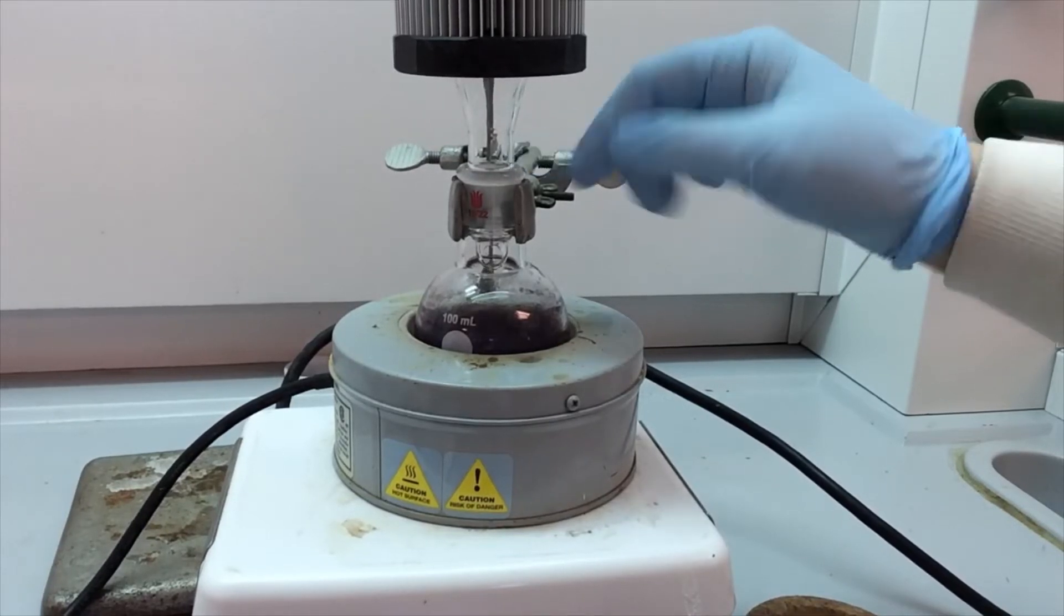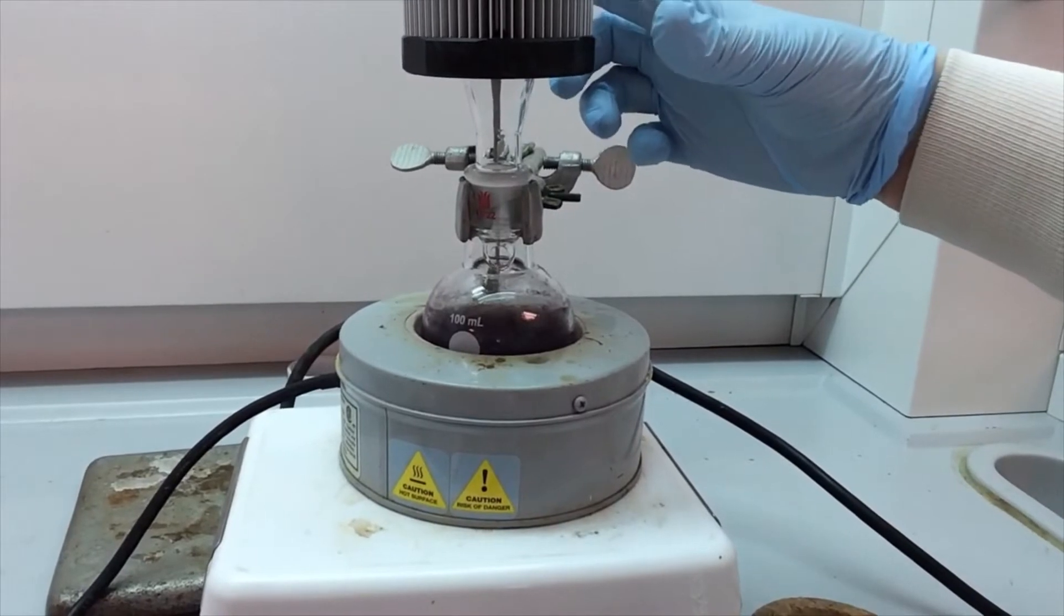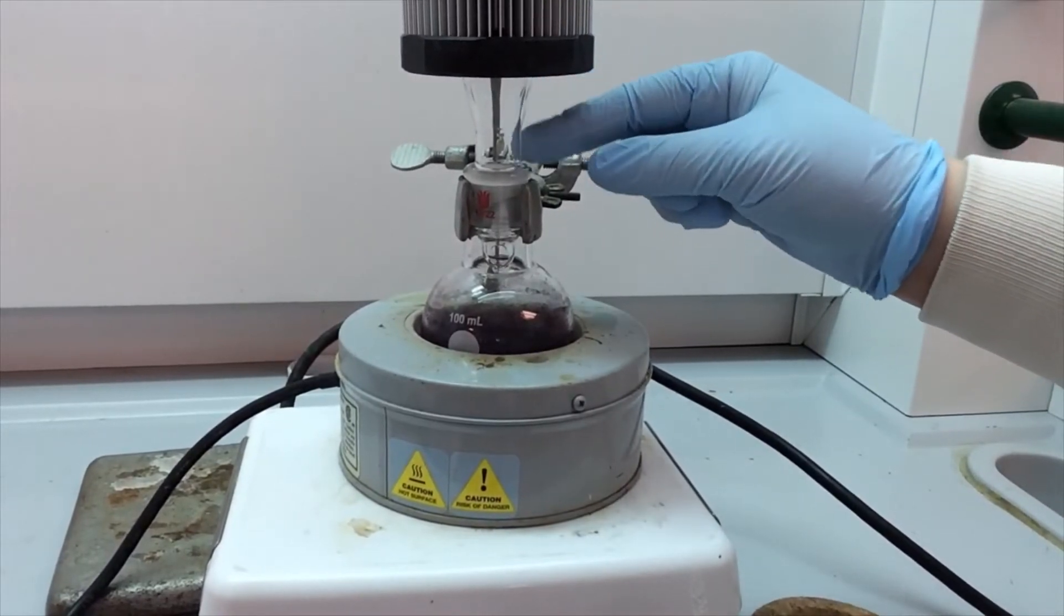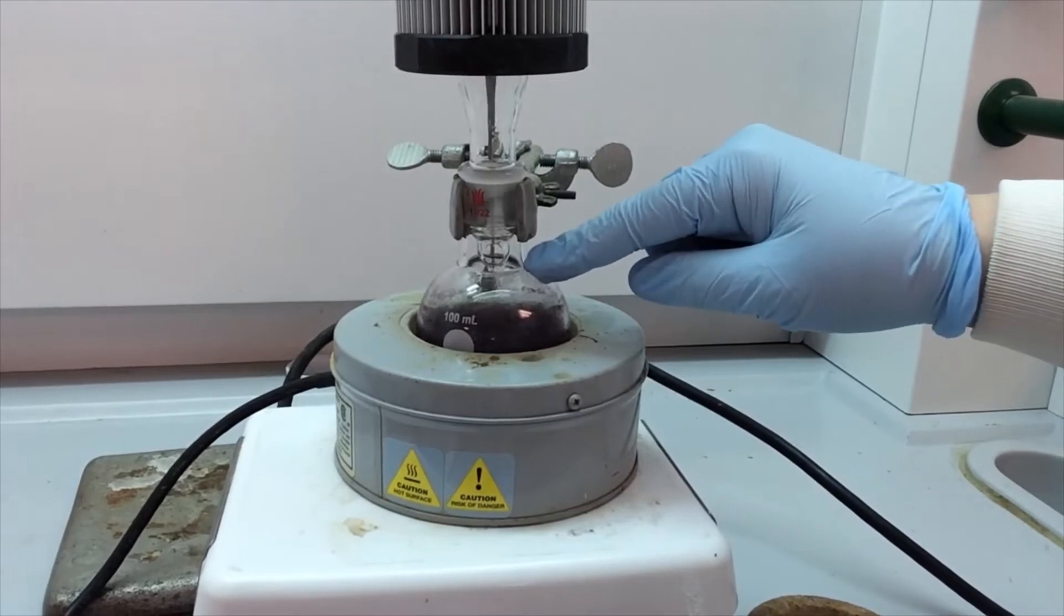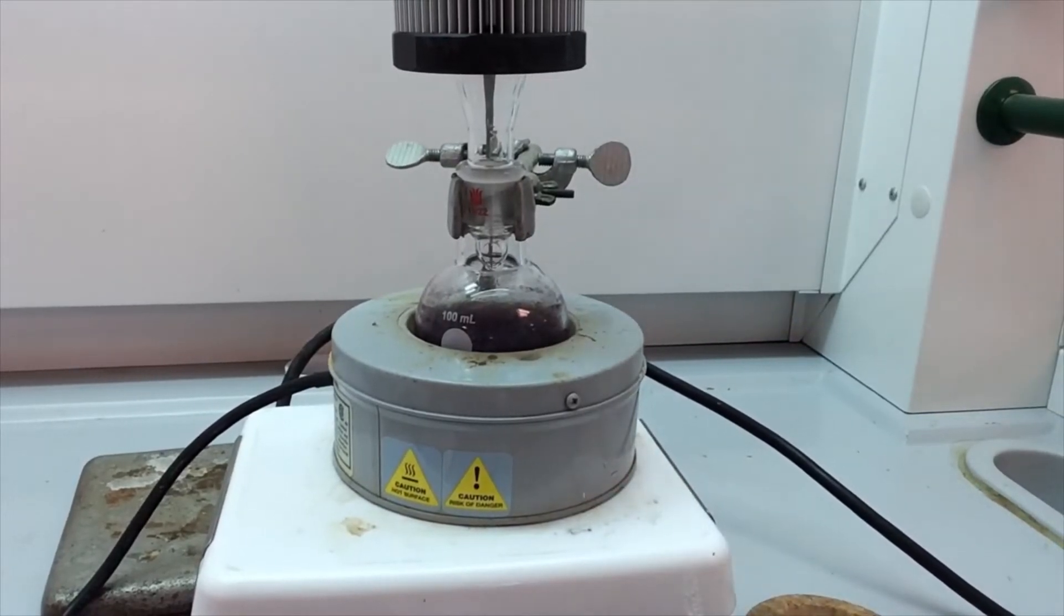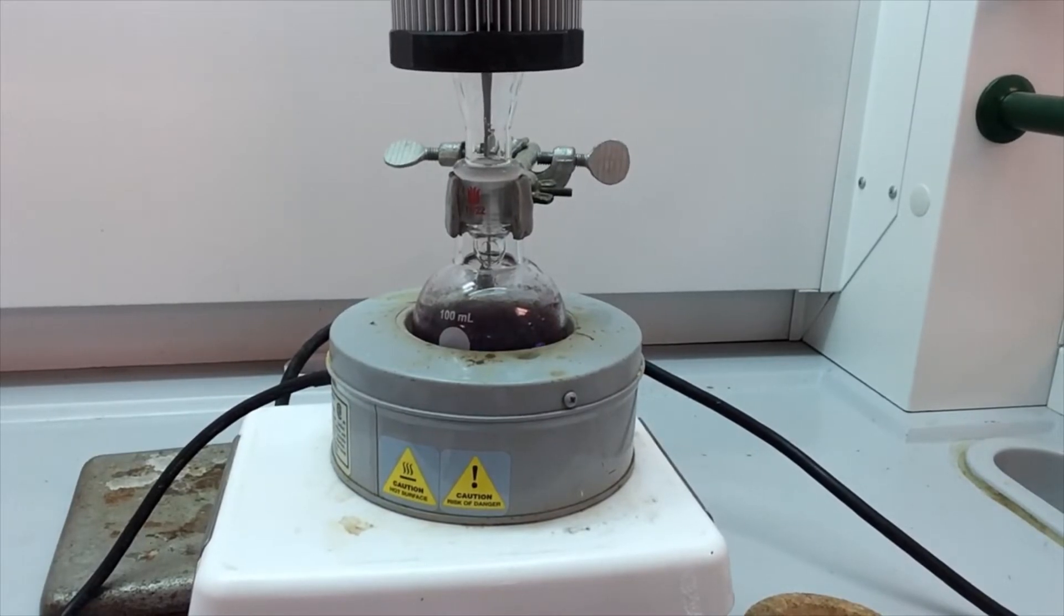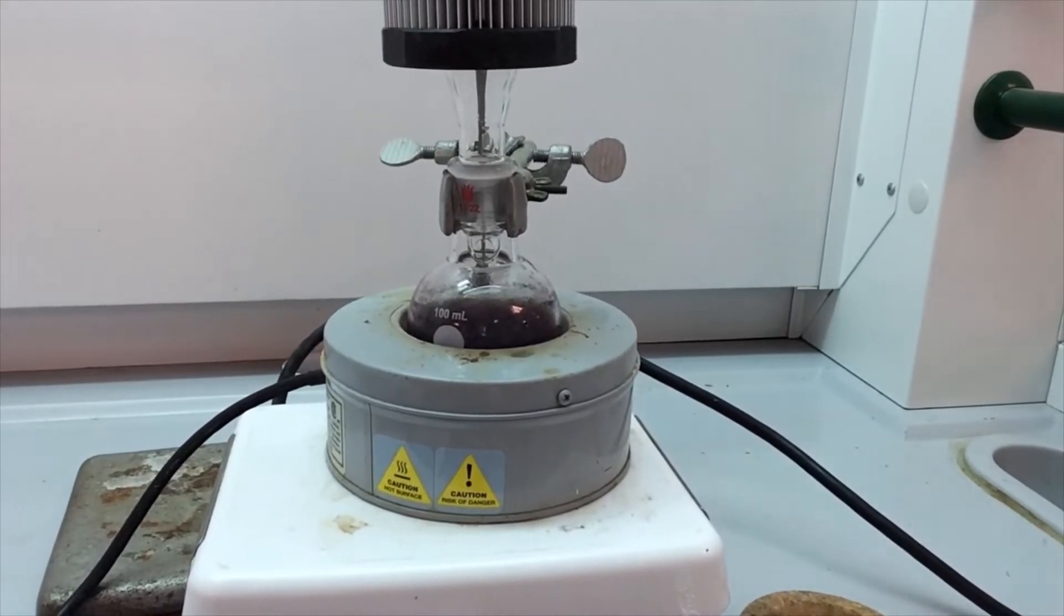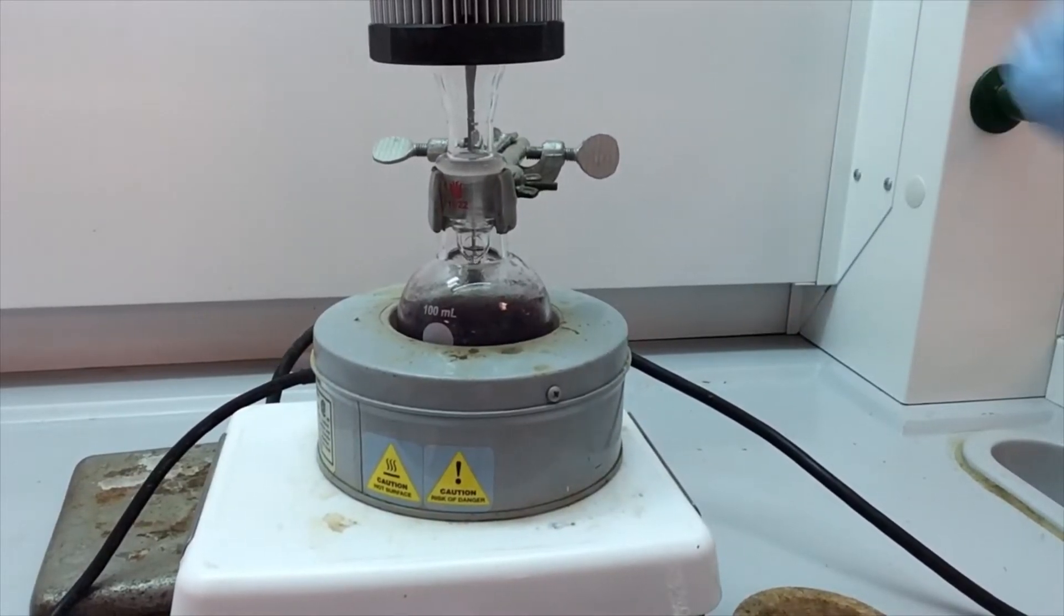So that hot solvent is going up into our condenser here. And then it is recondensing into a liquid and dripping back down. So this is a pretty good reflux rate. Once you see that dripping, that's when you start your reflux period. So if I needed to reflux 30 minutes, this is my starting time point.